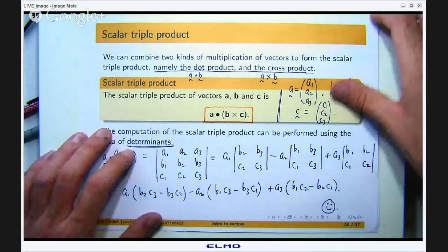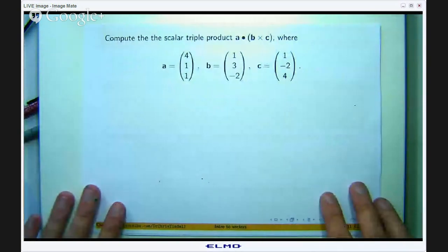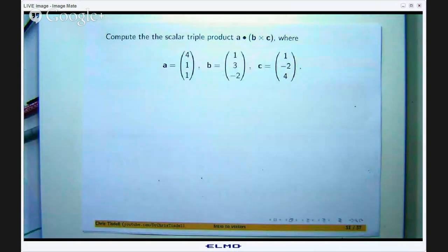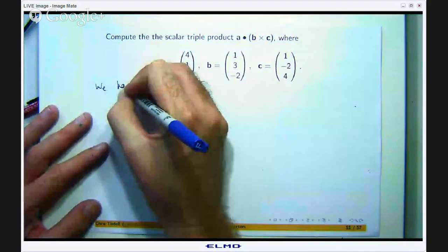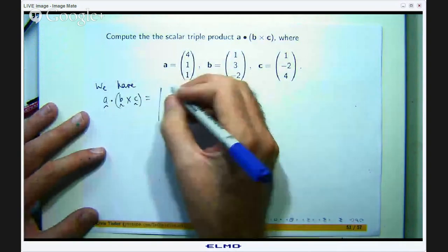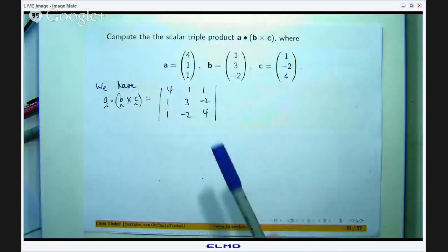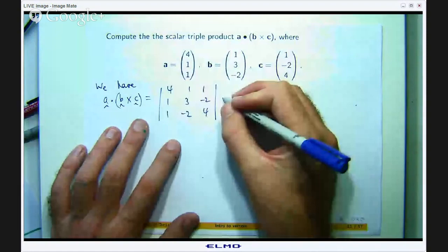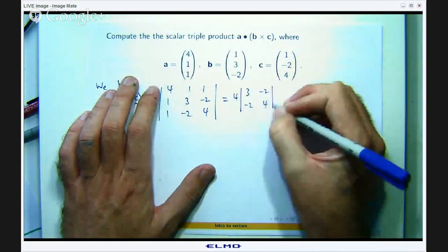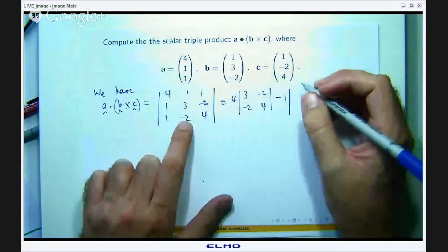So let us do an example and we will see how we go. Compute the scalar triple product a dot (b cross c) with a = (4, 1, 1), b = (1, 3, -2), and c = (1, -2, 4). So let us just run through it and we will just use determinants. So we have a dotted with b cross c, so that would be the determinant with 4, 1, 1 in the first row, 1, 3, -2 in the second row, and 1, -2, 4 in the third row. So let us expand along the top row.